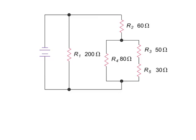R3 and R5. Since these resistors are in series, we can simply add their values, 50 ohms plus 30 ohms to get 80 ohms.